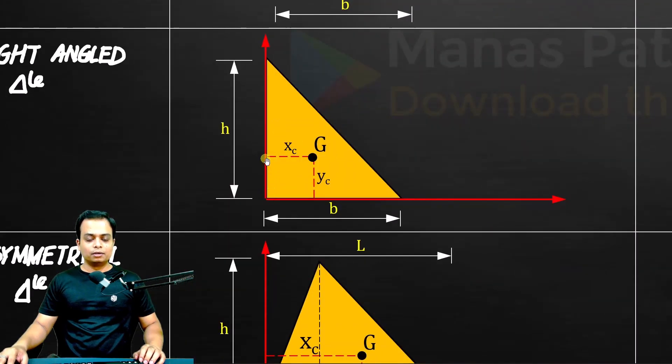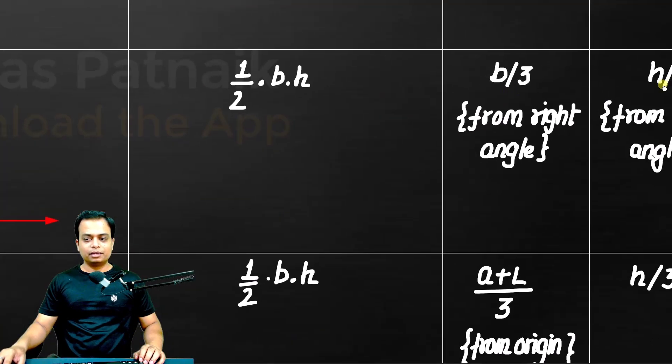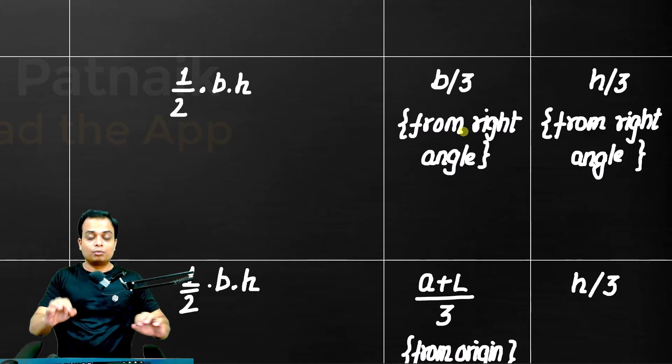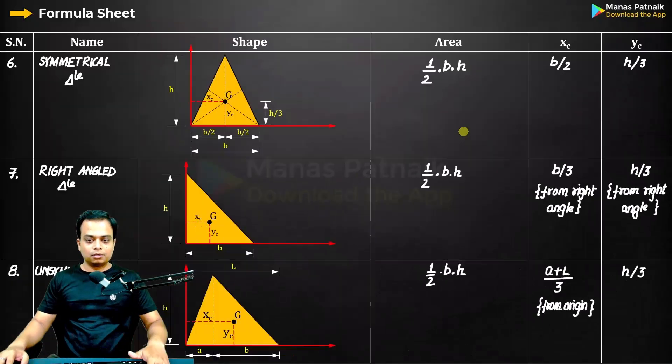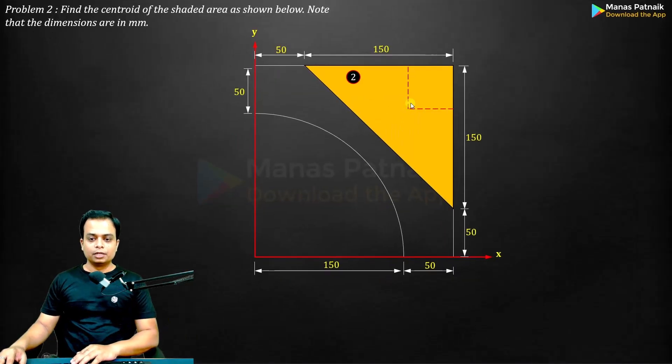Area b/3, h/3. Please, there is only one formula that you need to remember for triangles. For right angle triangle, b/3, h/3 from right angle. Remember this. Done, sir. Now what?